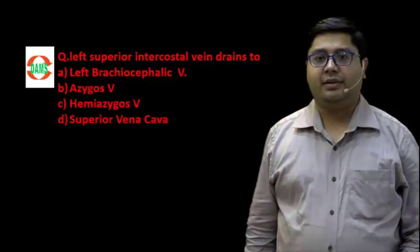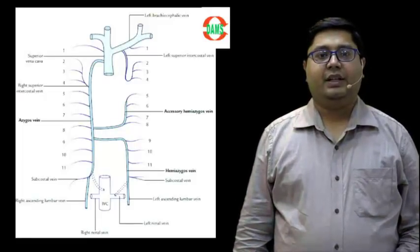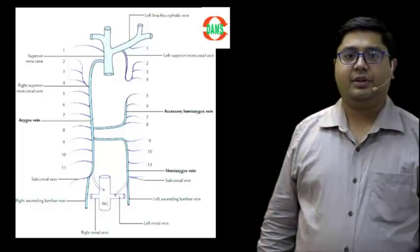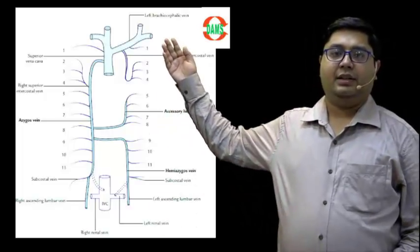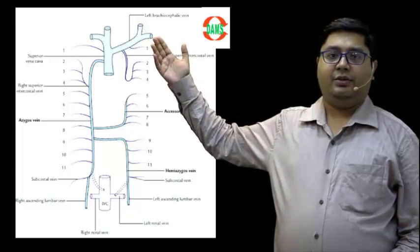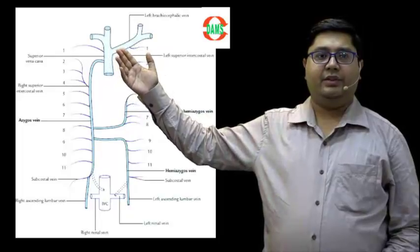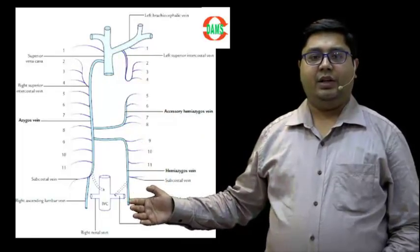Now to get to the answer, let us see the venous drainage here. The posterior intercostal veins drain in this manner. Let us see the formation. We have the brachiocephalic - left brachiocephalic and right brachiocephalic. These two veins join together to form superior vena cava.